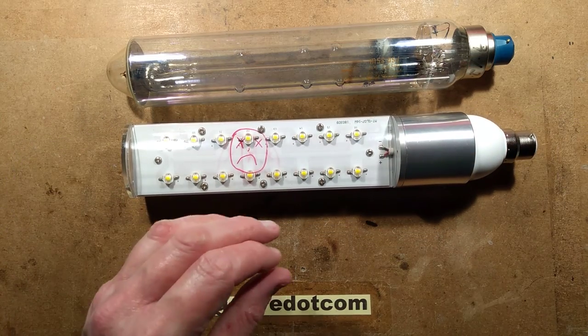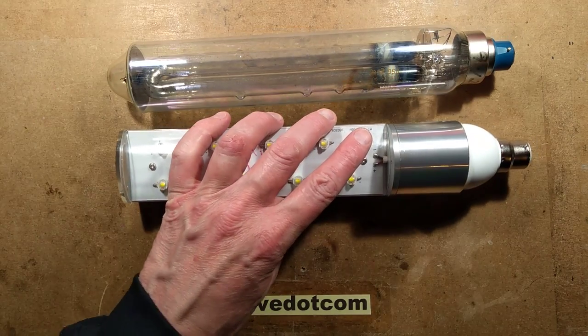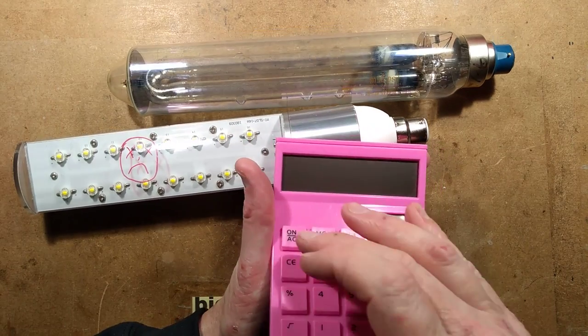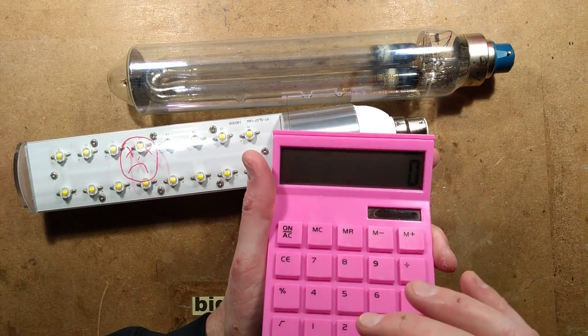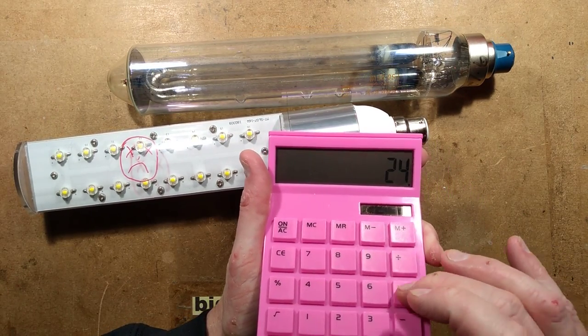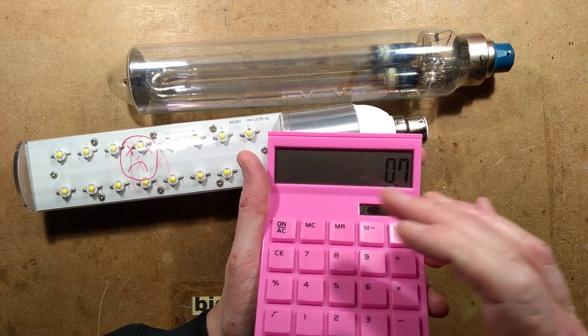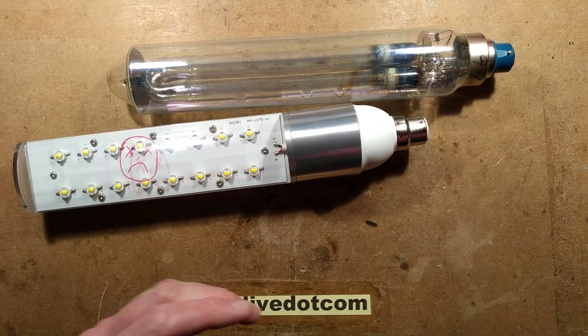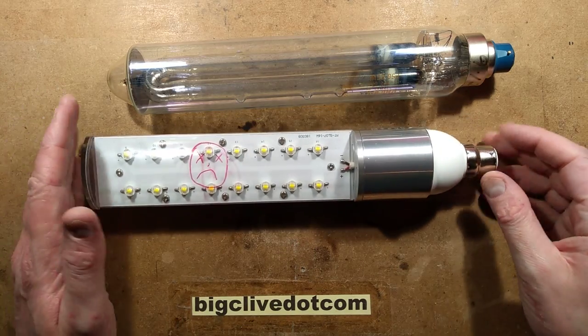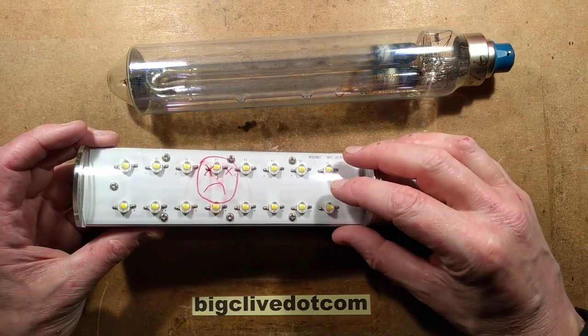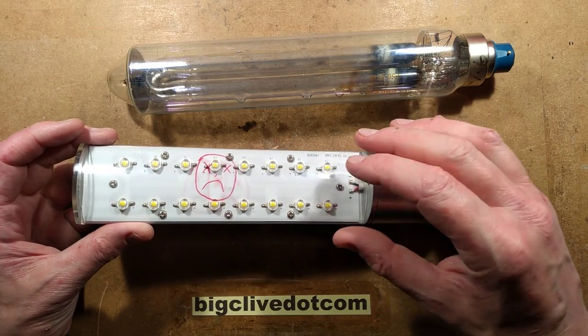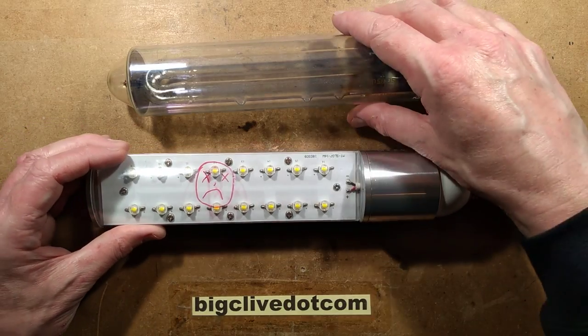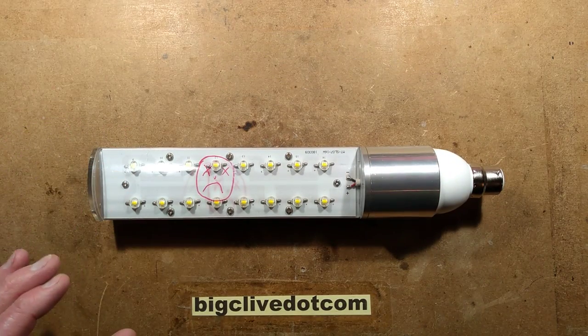I've got, say, 24 volts times about 0.7 amps equals 16 watts. That's exactly what it is. They are running them as 1 watt LEDs, which is good because these packages are optimal for 1 watt, which makes it reliable. However, this lamp is not reliable.